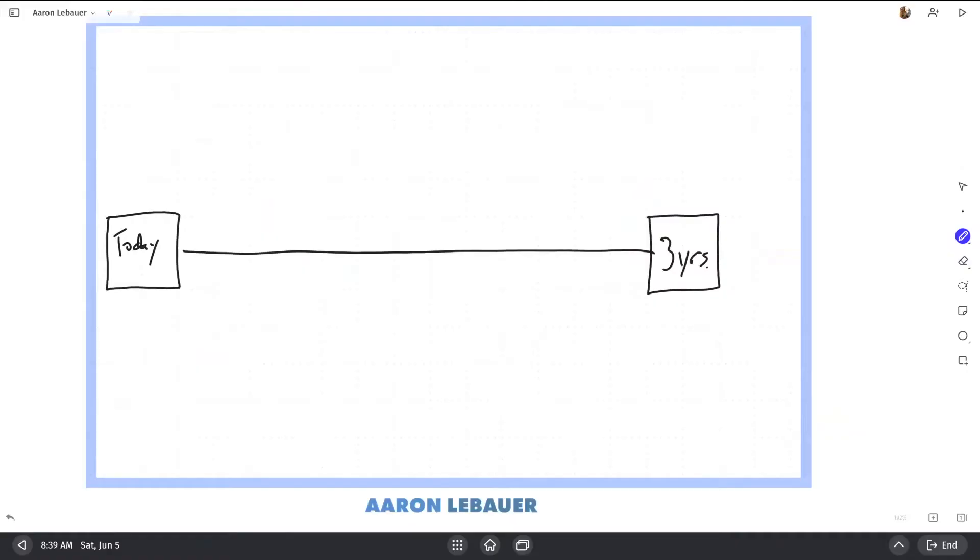And then we're going to draw four more boxes. So we're going to draw one at the top, and then one between that one, this one, and this one. Okay? So you've got four. These are four possible futures for you. The top one is your ideal, and then this one is okay, and this one is poor, and then let's call this one disaster.